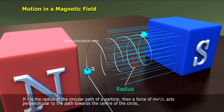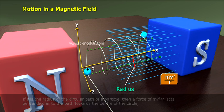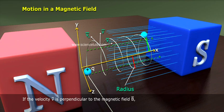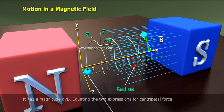If R is the radius of the circular path of a particle, then a force of M V² / R acts perpendicular to the path towards the center of the circle and is called the centripetal force. If the velocity V is perpendicular to the magnetic field B, the magnetic force is perpendicular to both V and B and acts like a centripetal force. It has a magnitude Q V B.